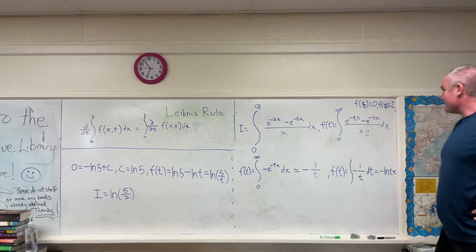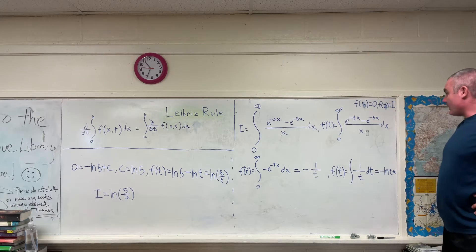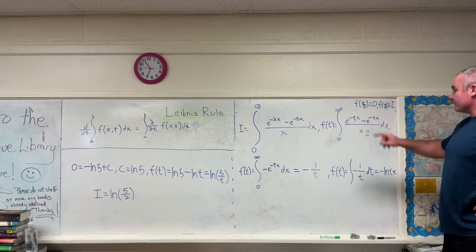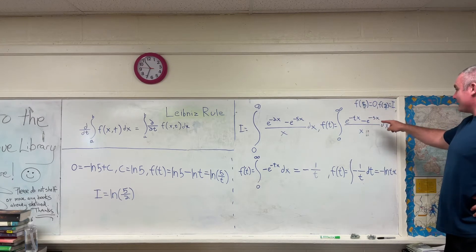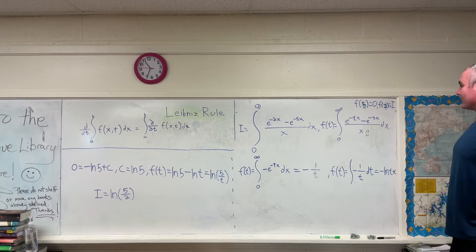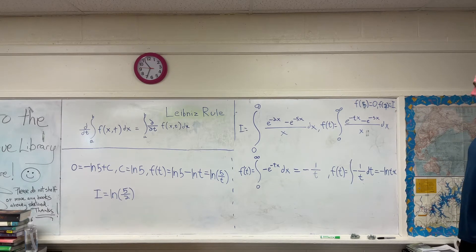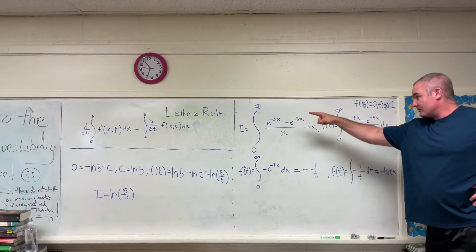So what we're going to do immediately is go ahead and make a function of t that's equal to the integral from 0 to infinity of e to the negative tx minus e to the negative 5x. I hope you can see why I did that. This t is basically just replacing that 2.